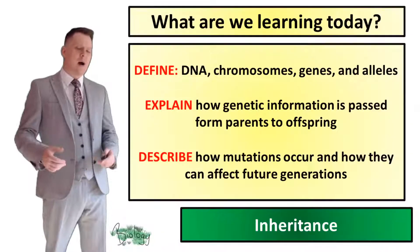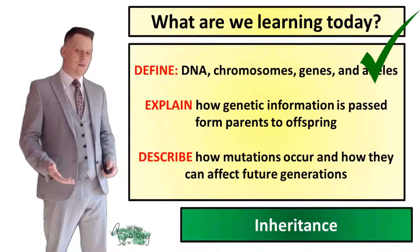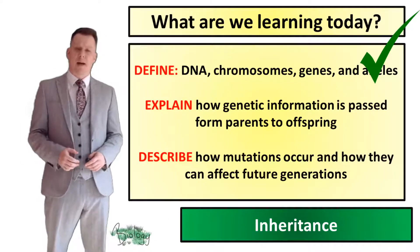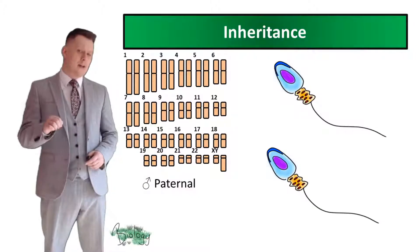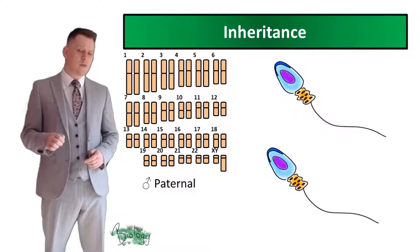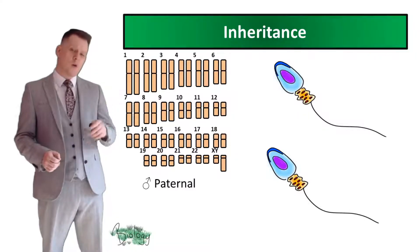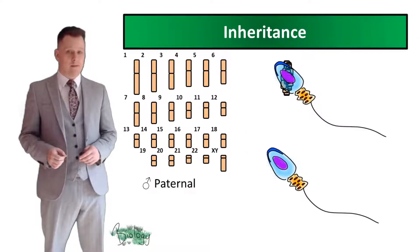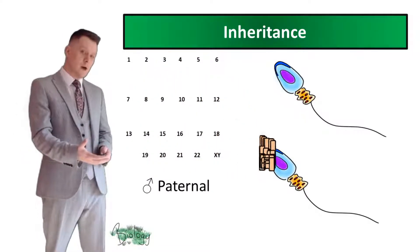So now we can define DNA, chromosomes, genes and alleles. Next we want to explain how genetic information is passed from parents to offspring. In a normal human body cell there are 23 pairs of chromosomes. When a sperm cell is created, one chromosome from each pair goes into one sperm cell and the other half goes into another sperm cell.